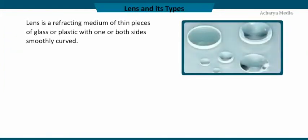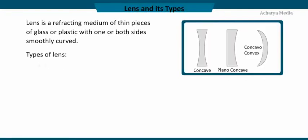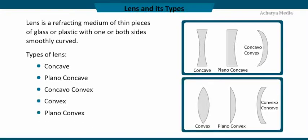A lens is a refracting medium with shaped pieces of glass or plastic with one or both sides smoothly curved. The different types of lenses are concave, plano-concave, concave-convex, convex, plano-convex, and convex-concave.